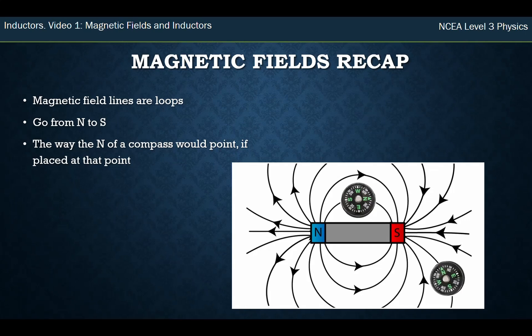Put a compass here, it would be pointing this way. So wherever you put a compass, it points the way the field lines go. So that last compass is pointing away from the north of the bar magnet, because the same poles push away from each other. They repel.